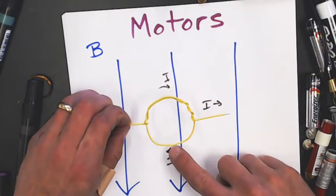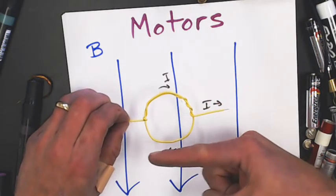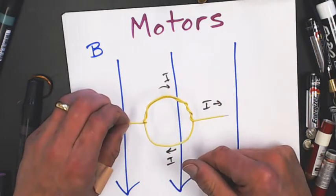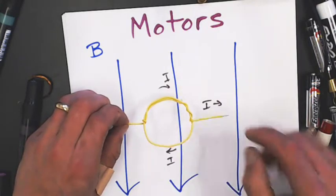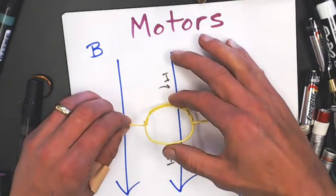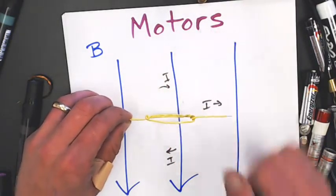So the current down here, current's moving this way, the field points down, thumb is pointing towards the camera. So this side's going to get pushed up. So what's going to happen is as the current flows through here, it's going to create a torque on the wire.